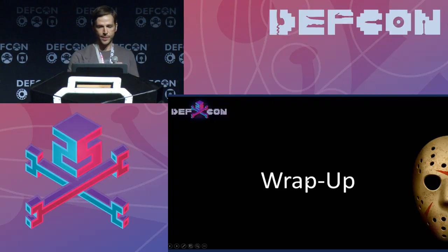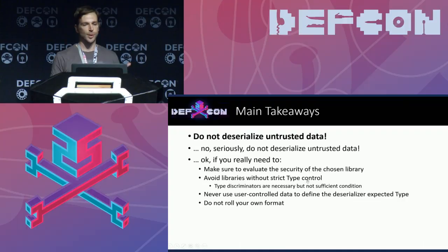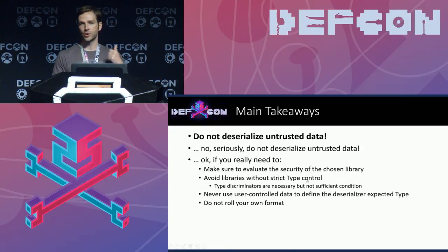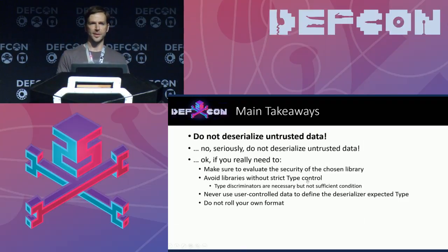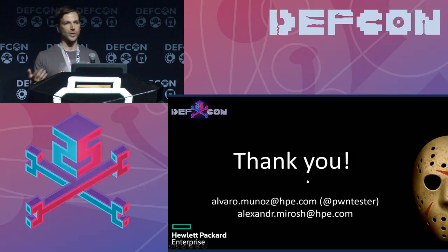To wrap up: this is not a problem in JSON, XML, or any specific serializer. Try to avoid deserializing untrusted data — this is also a problem in Ruby, Python, and PHP. If you have to, get your library evaluated by security people. Try to avoid libraries that perform no type control — those doing only post-deserialization cast. Try to avoid libraries that include type discriminators. And don't allow developers to let users control the type, as we saw in DNN. Last but not least, don't roll your own format, because you can just mess it up. Thank you very much — if you have any questions, please have our emails.